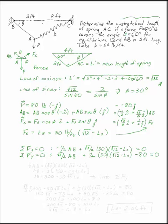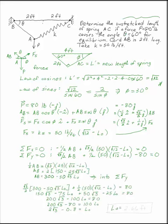This is two equations and two unknowns, and we can solve. Let's solve this first equation for AB and substitute it into the second equation. So L0 would be 2.66 feet.